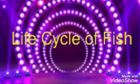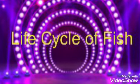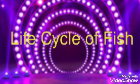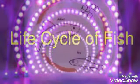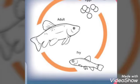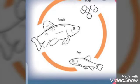Now we will discuss the Life Cycle of Fish. Most fish have babies by laying eggs in water. The babies which come out of the eggs are called fry, and then they turn into an adult fish.